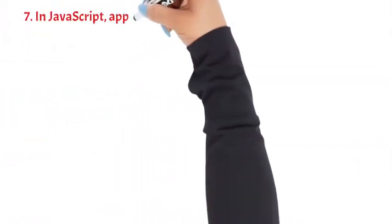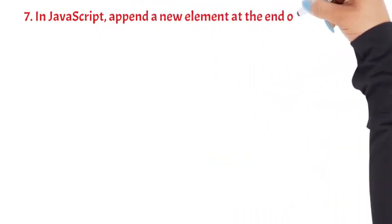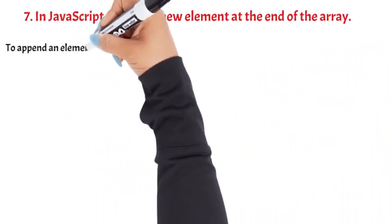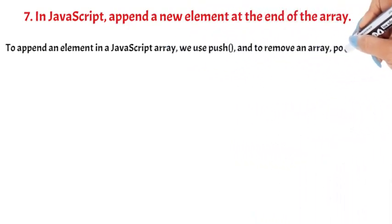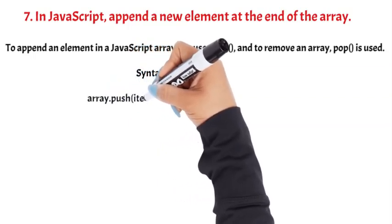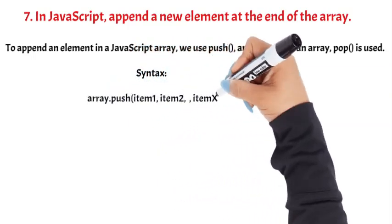Question 7: In JavaScript, append a new element at the end of the array. To append an element in a JavaScript array, we use push, and to remove an array, pop is used. Syntax: array.push(item1, item2, itemX).